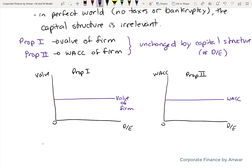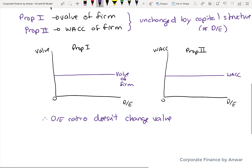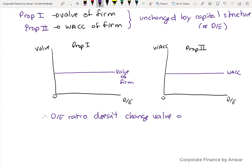The conclusion here is that you don't need to adjust the weighted average cost of capital for any of these scenarios, because it's not going to make any difference.